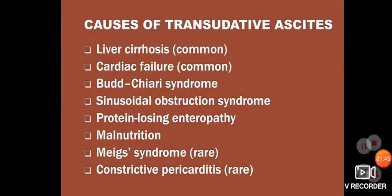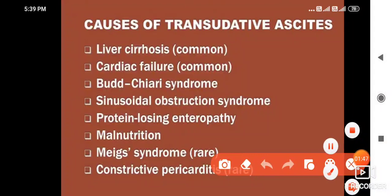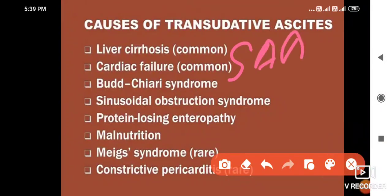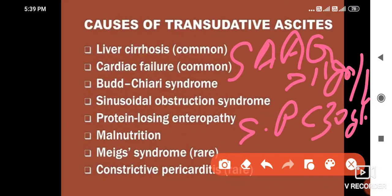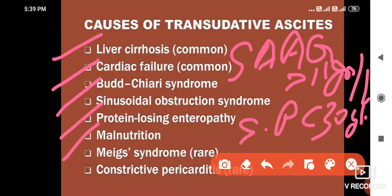In transudative ascites, SAAG — Serum Ascites Albumin Gradient — is more than 11 grams per liter, whereas serum proteins are less than 30 grams per liter. Causes of transudative ascites include liver cirrhosis, cardiac failure, Budd-Chiari syndrome, sinusoidal obstruction syndrome, protein-losing enteropathy, malnutrition, mixed syndrome, and constrictive pericarditis, which is rare.